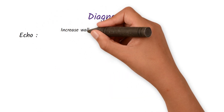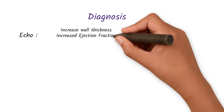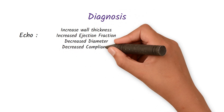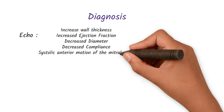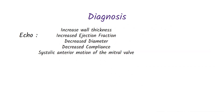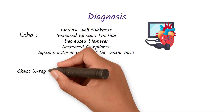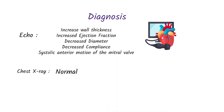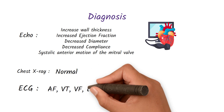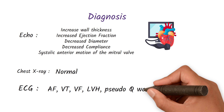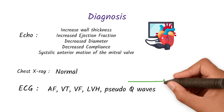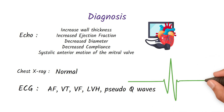For the diagnosis of hypertrophic cardiomyopathy, on echo you will see increased wall thickness due to hypertrophy, increased ejection fraction, decreased chamber diameter, decreased compliance, and systolic anterior motion of the mitral valve. The chest X-ray is normal. ECG findings include atrial fibrillation, ventricular tachycardia, ventricular fibrillation, left ventricular hypertrophy, and most importantly pseudo Q-waves particularly in leads II, III, and aVF.